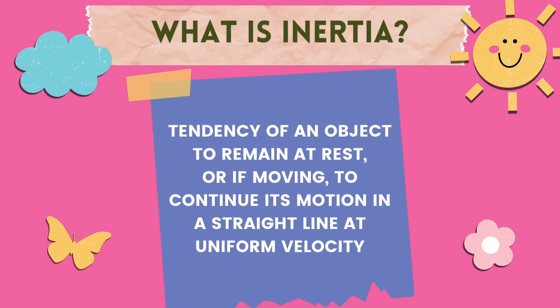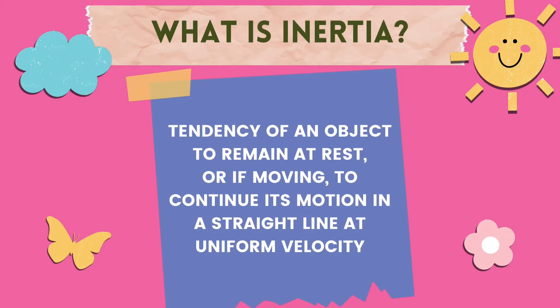First off, what is inertia? Inertia can be defined as the tendency of an object to remain at rest or, if moving, to continue its motion in a straight line at uniform velocity. To help you understand this, do you think it's harder to run in a zigzag motion or to run in a straight line? The answer is it is harder to run in a zigzag motion, because our body has the tendency to retain its motion in a straight line, which makes it harder for us to run in a different direction, or in a zigzag motion. That is inertia.